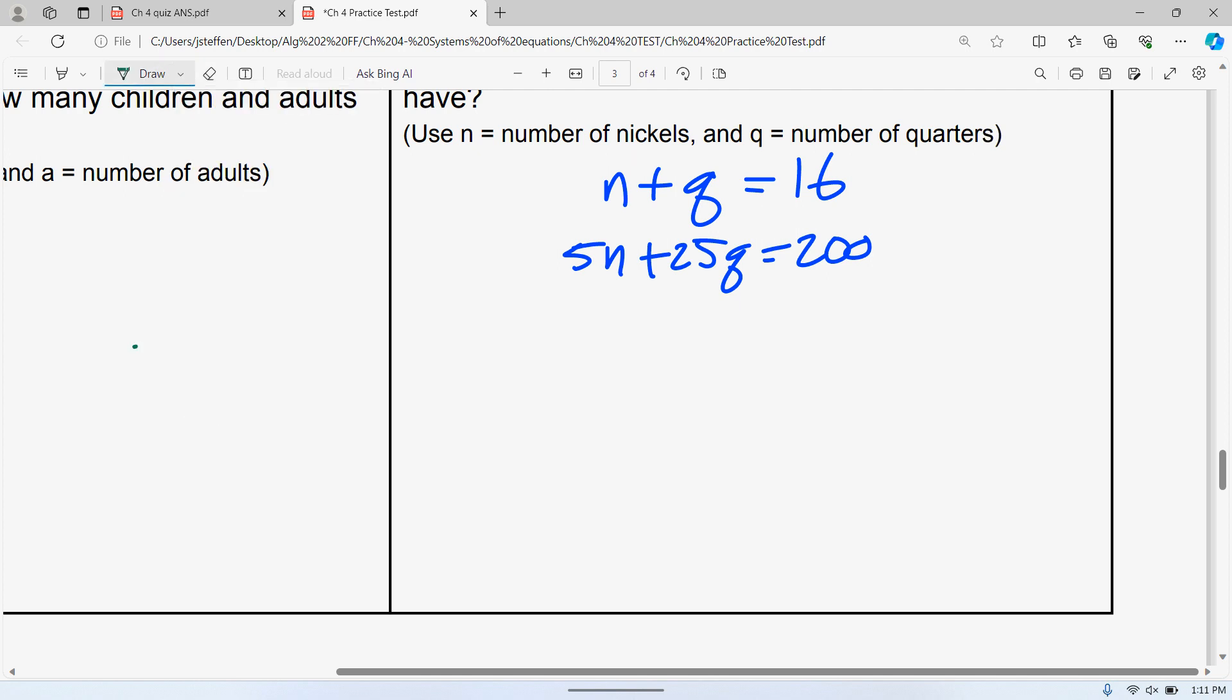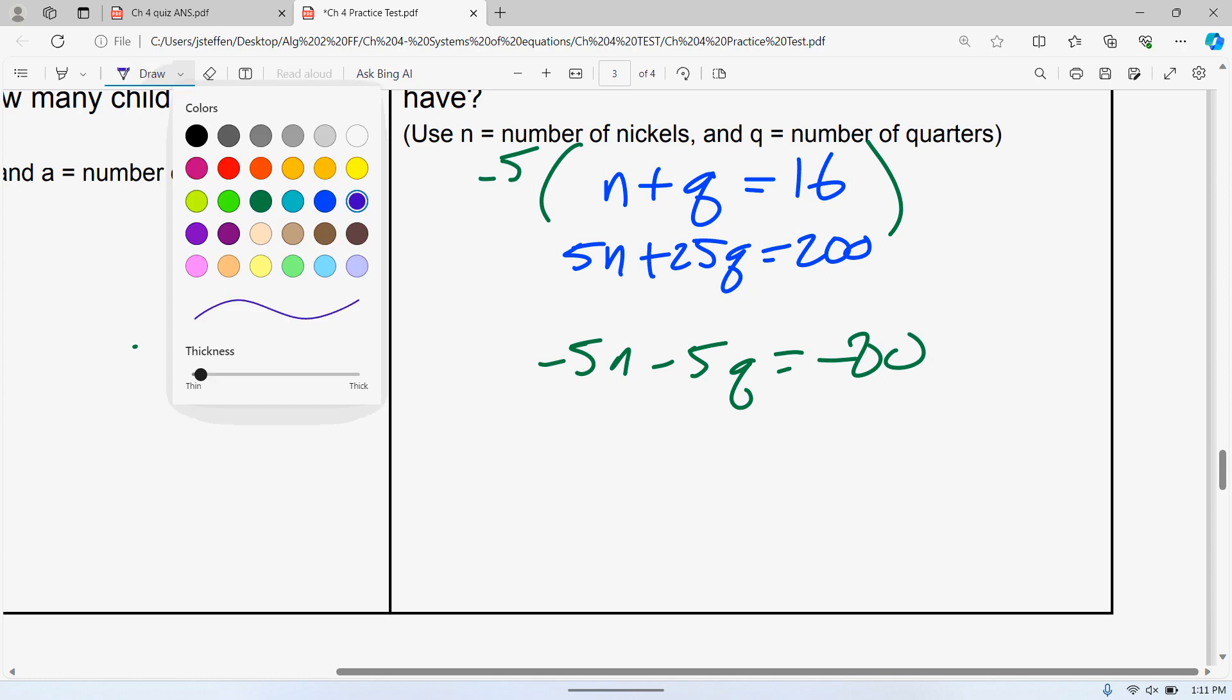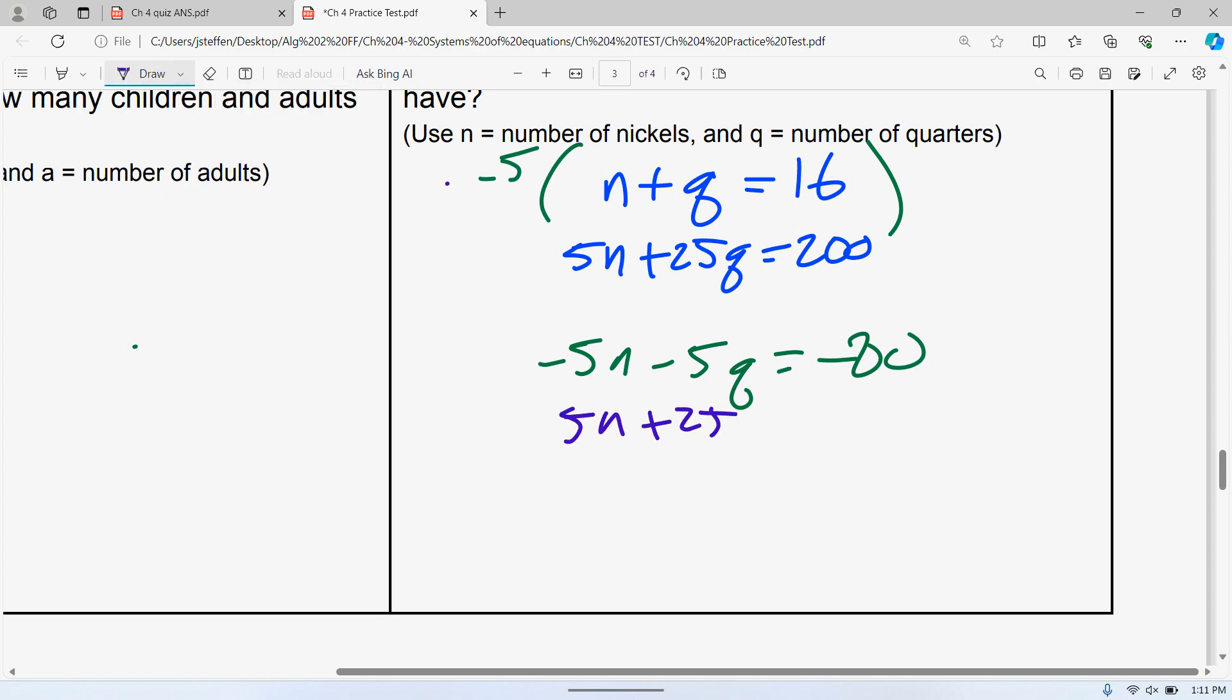To multiply the first equation by negative 5. So that will give us negative 5N minus 5Q is equal to 16 times 5 is, I want to say 60, no, not 60, 80 maybe. Negative 80. The other equation doesn't change at all. 5N plus 25Q is equal to 200. So those cancel. We end up with 20Q is equal to negative 80 plus 200 is 120. Divide both sides by 20. 120 divided by 20 is 6. So your Q is equal to 6. So we have 6 quarters.